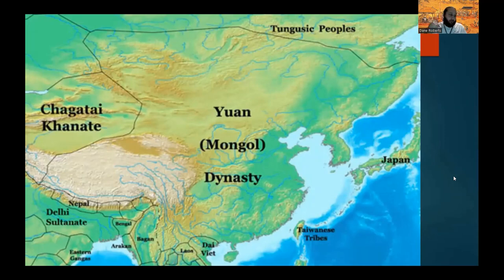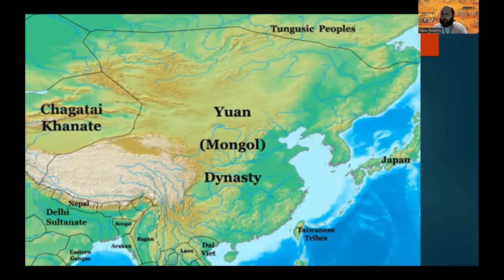The Yuan Dynasty was officially founded in 1270 CE by the Mongol Great Khan Kublai Khan. For most of its roughly 100 years of history, it was a relatively stable and powerful empire. However, as with all empires, it began to decline — due to a variety of natural disasters.